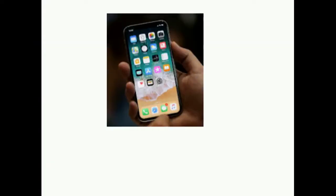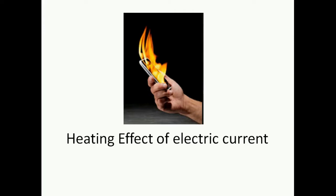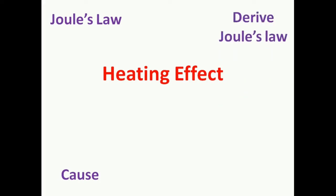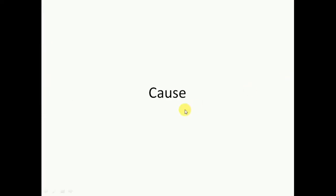Hello everyone. You might have observed that using a cell phone for a long time results in heating of the cell phone. This happens due to the heating effect of electric current. Today in this video we are going to talk about the heating effect of electric current, the cause of heating effect, Joule's law of heating, its derivation, and its applications. When electric current flows through a conductor, the conductor becomes hot, and this effect of current is called the heating effect of electric current.